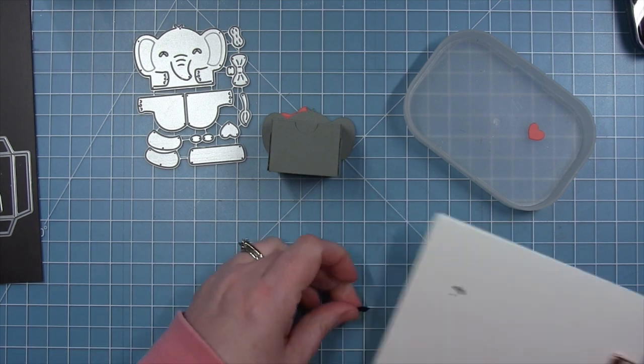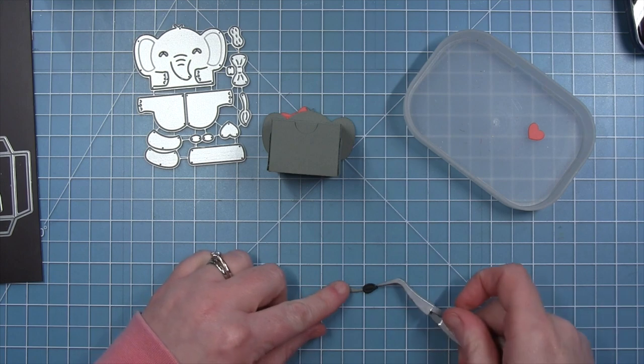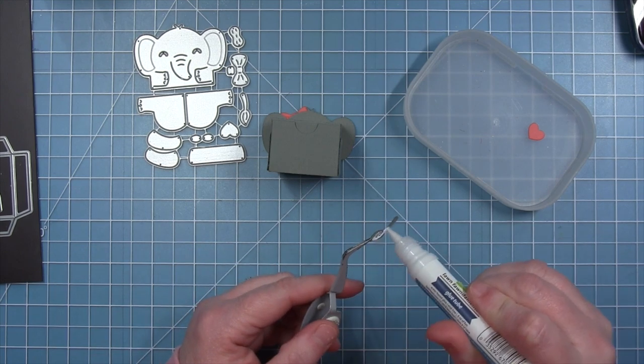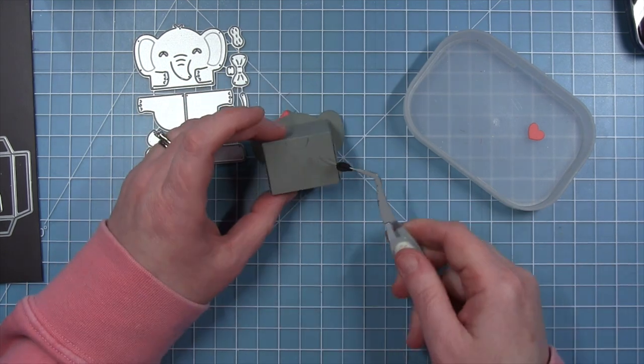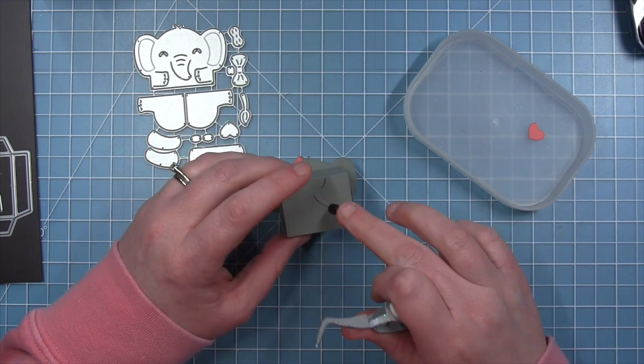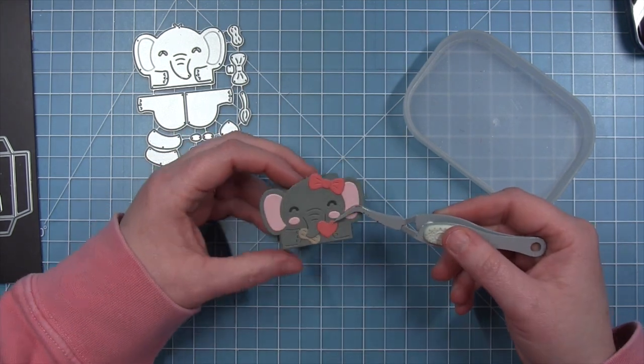Now for the tail, I decided to color the end of the tail just with my marker and darken that up a little bit. And then I'm just going to attach that to the back of the box below that little notch where you can grab hold of it.